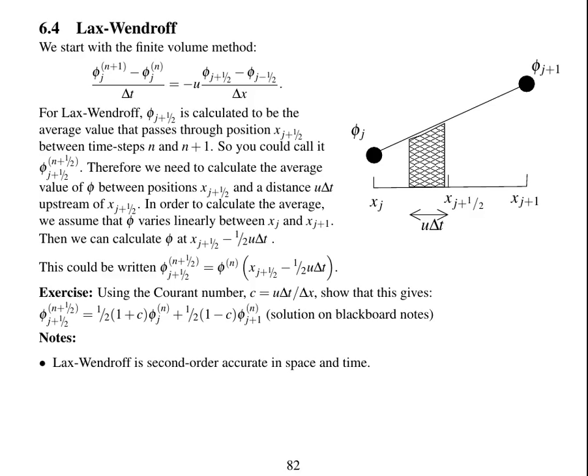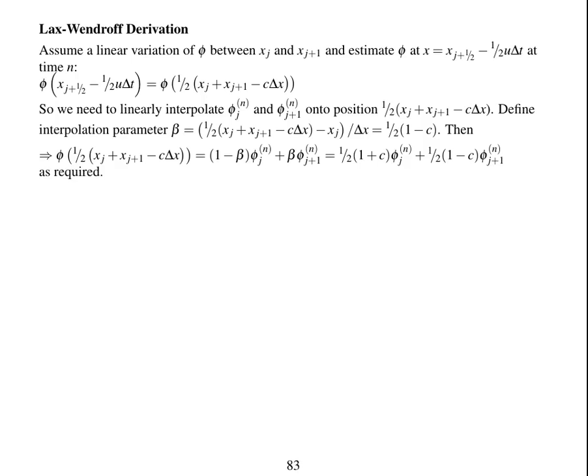So a couple of points to mention before I show the solution. Lax-Wendroff is second order accurate in space and time, but it's a linear scheme, and it's second order, so it's not monotonic and it's not bounded. It's stable for Courant numbers less than 1. So now here is the solution for how to derive Lax-Wendroff's scheme, which I'm not going to talk through.